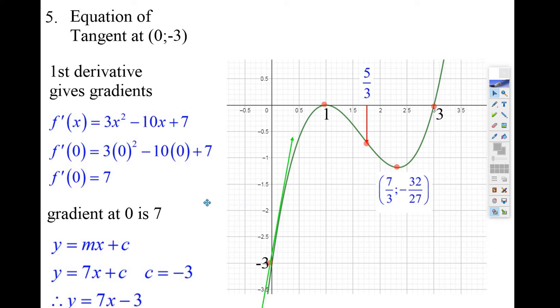Well, if you want to find the equation of a line, you're going to need the gradient there. And how do you get gradients? Well, it's the first derivative. Well, we've got the formula for the first derivative. All we do is put 0 in there.